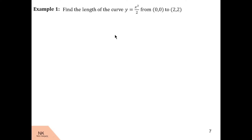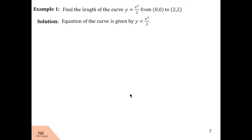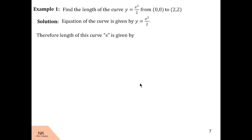In this question, we are asked to find the length of the curve given by equation y is equal to x²/2 from point (0,0) to (2,2). The equation of the curve is y = x²/2, which is of the type y = f(x). We say s is the length of this curve, then s is given by the formula: integration of under root 1 plus (dy/dx)² dx over the limit x1 to x2.